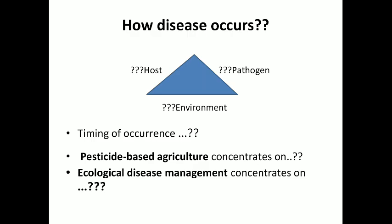Let's see in detail how disease occurs. When the host is susceptible, the pathogen is virulent, and the environment is favorable for the growth of the pathogen, then only disease occurs — all three must occur at the same time. Pesticide-based agriculture concentrates mainly on reducing the disease after it is seen, whereas ecological disease management concentrates on avoiding the conditions that predispose to the disease.